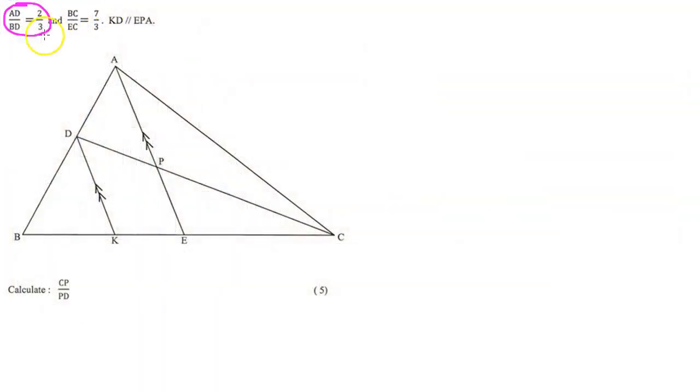Hi guys, we're going to be looking at a video on ratio and proportion, Grade 12 Euclidean geometry. As you can see, we are given AD over BD is 2 over 3. Therefore, we make AD equal to 2x and BD equal to 3x.